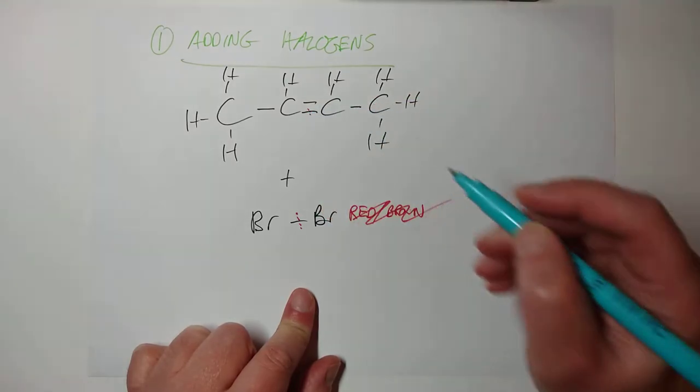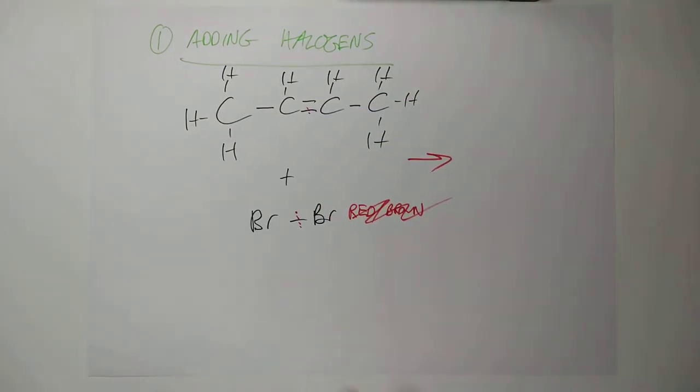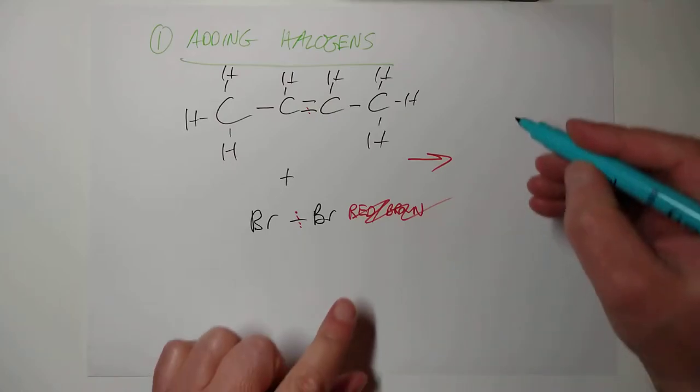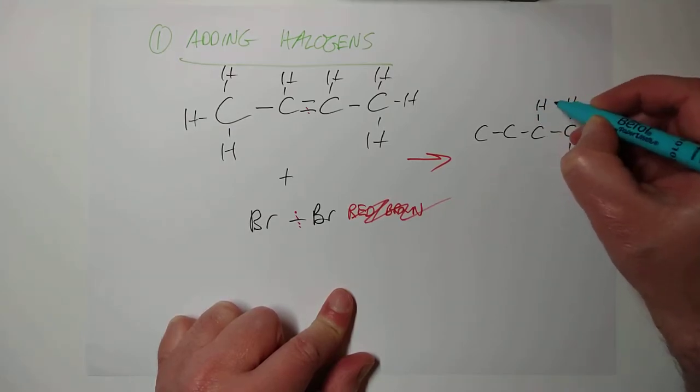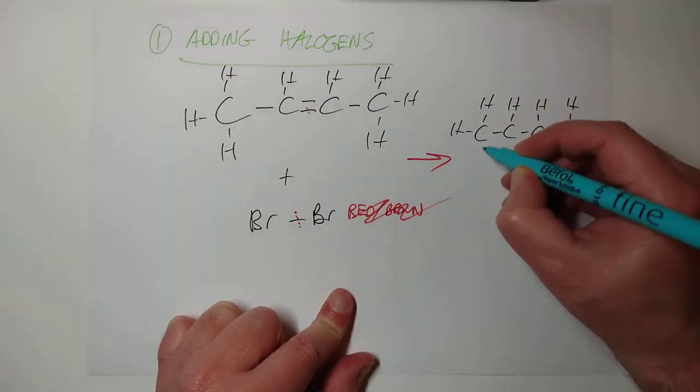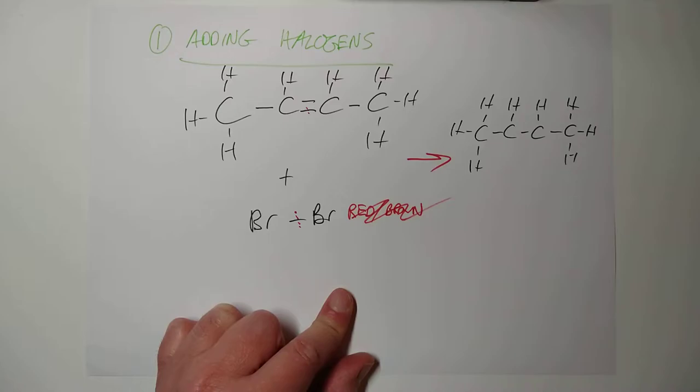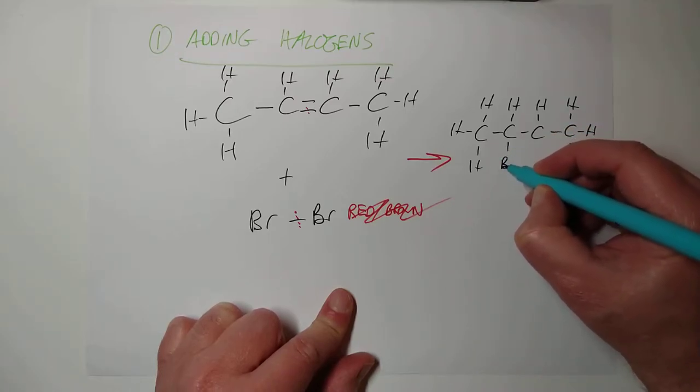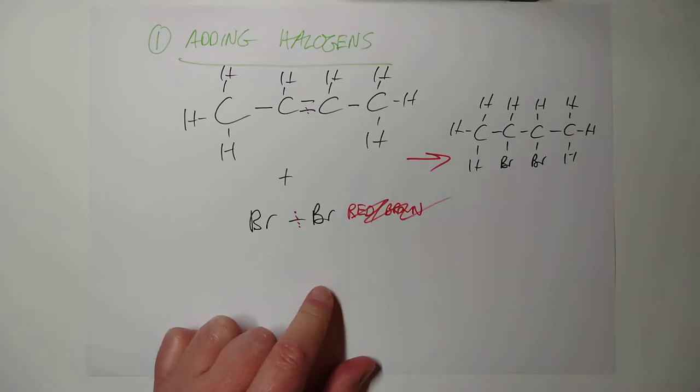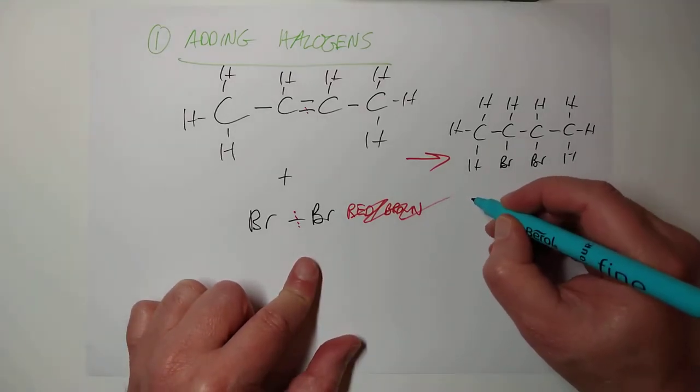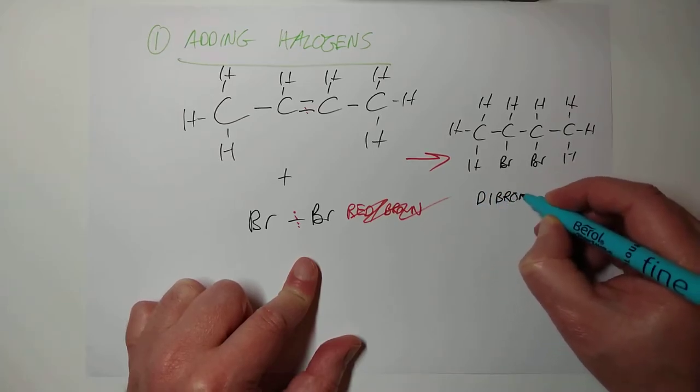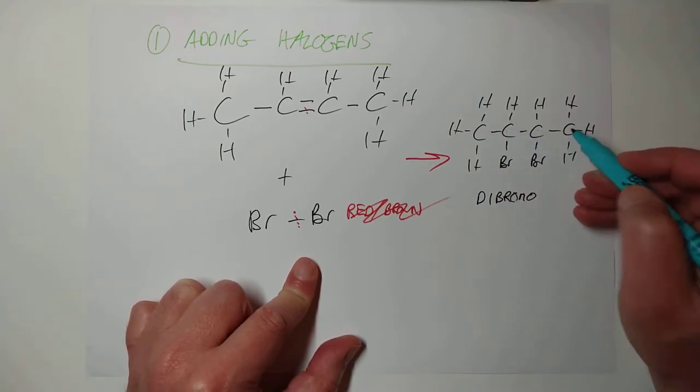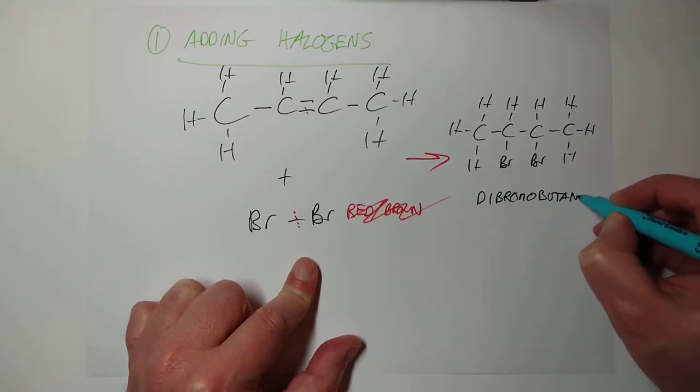So, if we are going to break this bond here, we're also going to break that bond there, and we will make a single molecule with no double bonds anymore. These hydrogens here have not changed their place. And what we do have now, added on here, are two bromine atoms. And this, I'll give you the proper name for this, because this is dibromo 1,2,3,4-butane.